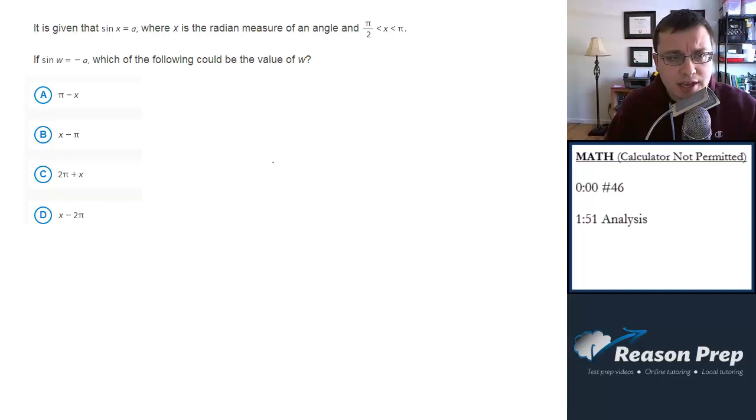It is given that sine of x equals a, where x is the radian measure of an angle, and pi over 2 is less than x is less than pi. If sine of w equals negative a, which of the following could be the value of w?